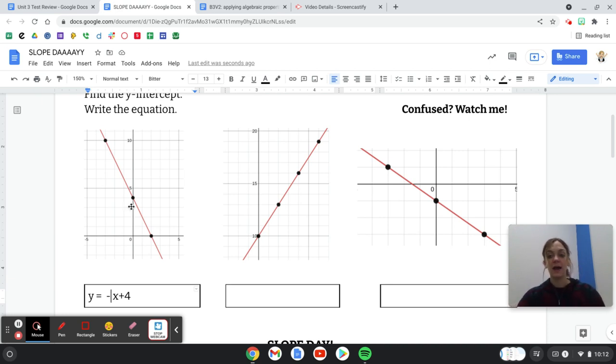Now I know I have to count my rise over run to find the slope, so I'm going down 1, 2, 3, 4, and then I'm going over 1, 2. So my slope is negative 4 over 2.